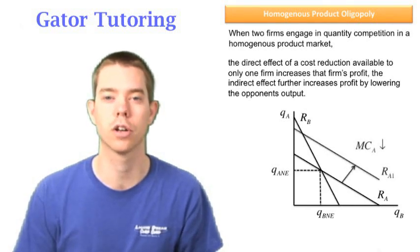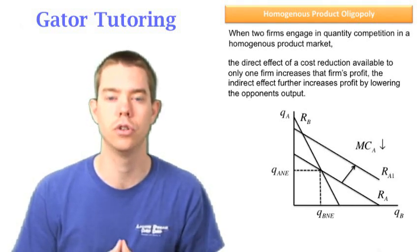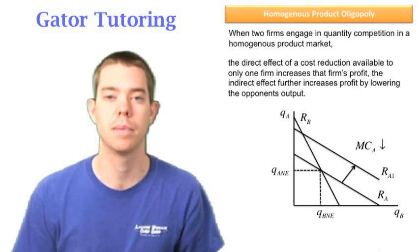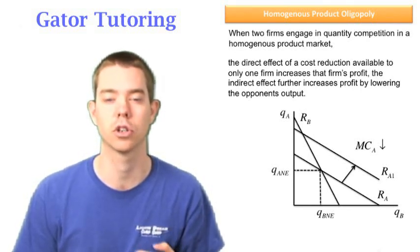If A's marginal cost goes down, the new Nash equilibrium quantity for A should be higher. So that means that we need to push the reaction function outward.